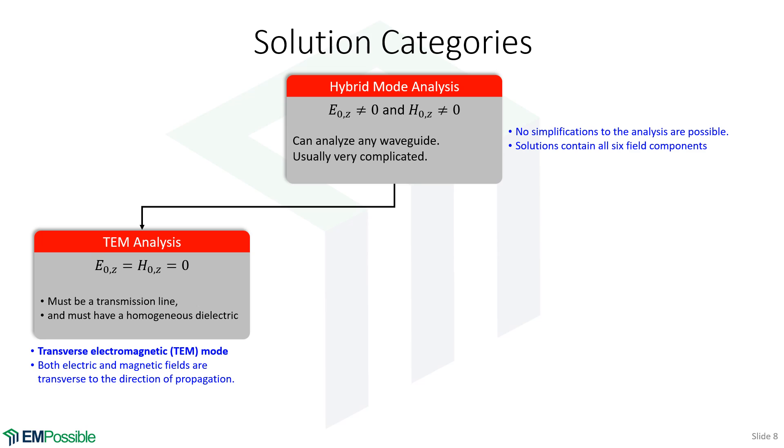If we're analyzing transmission lines, and there's a homogeneous dielectric, so that transmission line supports TEM modes, since that's TEM both E0Z and H0Z is zero. But there's conditions for that. It has to be a transmission line, homogeneous field. But that's an easy analysis. We can do that with electrostatics.